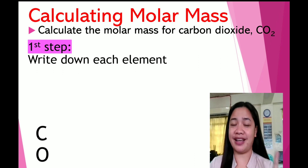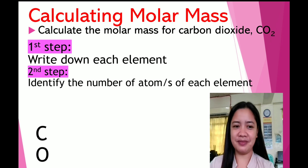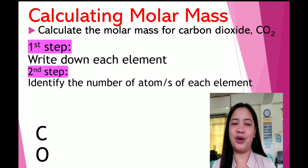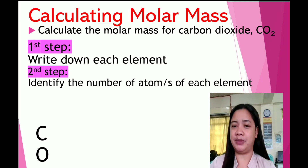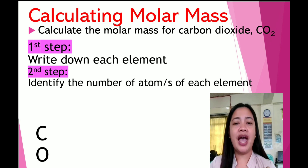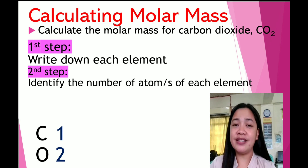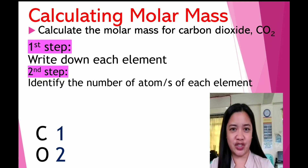For our second step, identify the number of atoms of each element. For our given problem, carbon has one atom, and oxygen has two atoms.